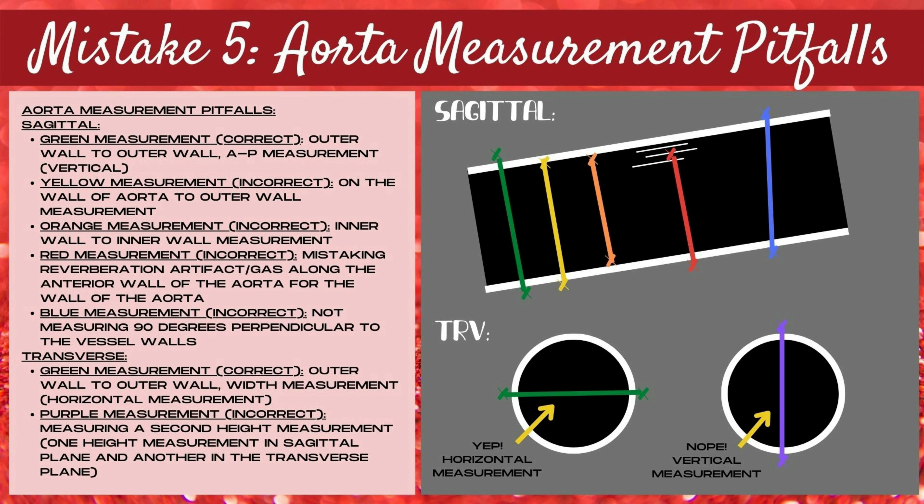Now let's talk transverse measurements. The green measurement is correct — this is an outer wall to outer wall width measurement, which is a horizontal measurement on the ultrasound image. The purple measurement is incorrect; this is measuring a second height measurement, with one height in the sagittal plane and another in the transverse plane. It's essential when measuring the aorta to have one measurement in the sagittal plane (the height, a vertical measurement) and the second in the transverse plane (the width, a horizontal measurement).